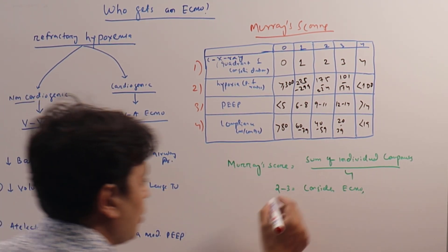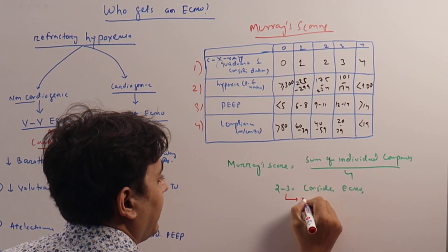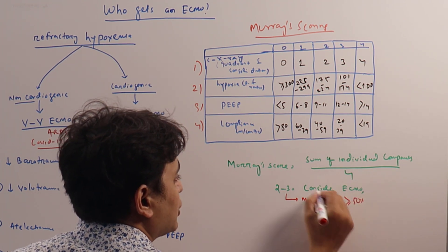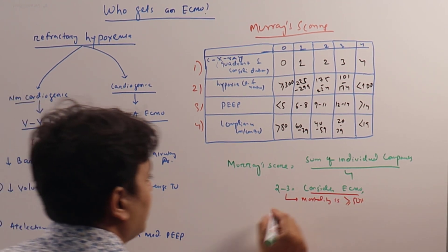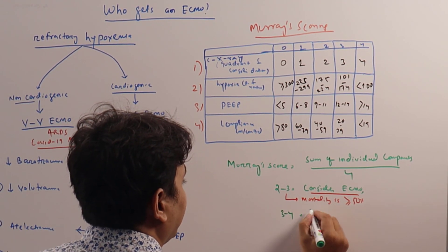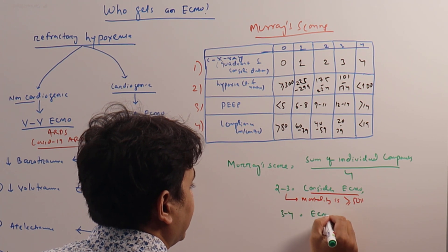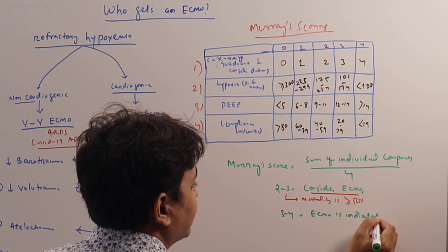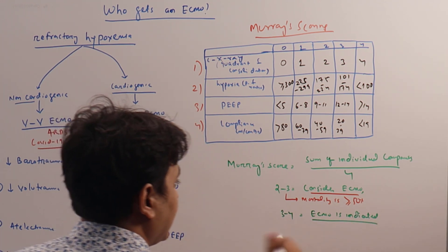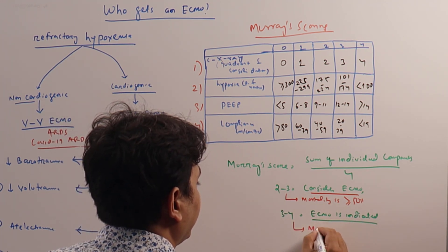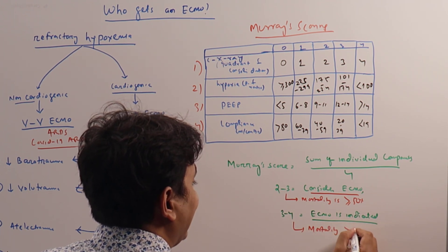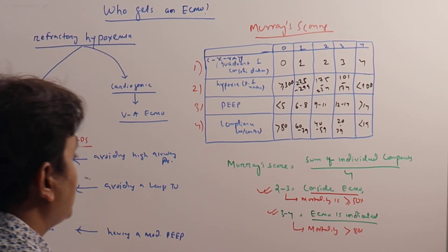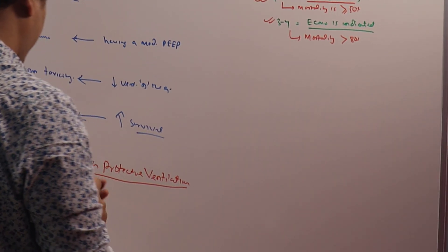If the score is 2 to 3, then consider ECMO because mortality is more than or equal to 50%. If the score is 3 to 4, ECMO is indicated, so you discuss it with the ECMO center. Why? Because here mortality is more than 80%.